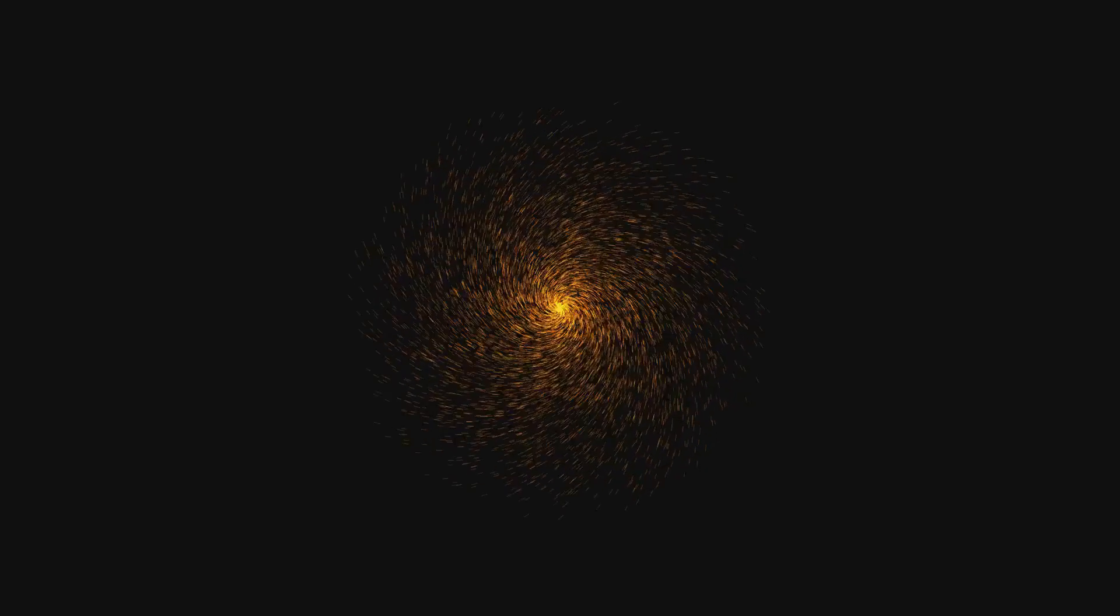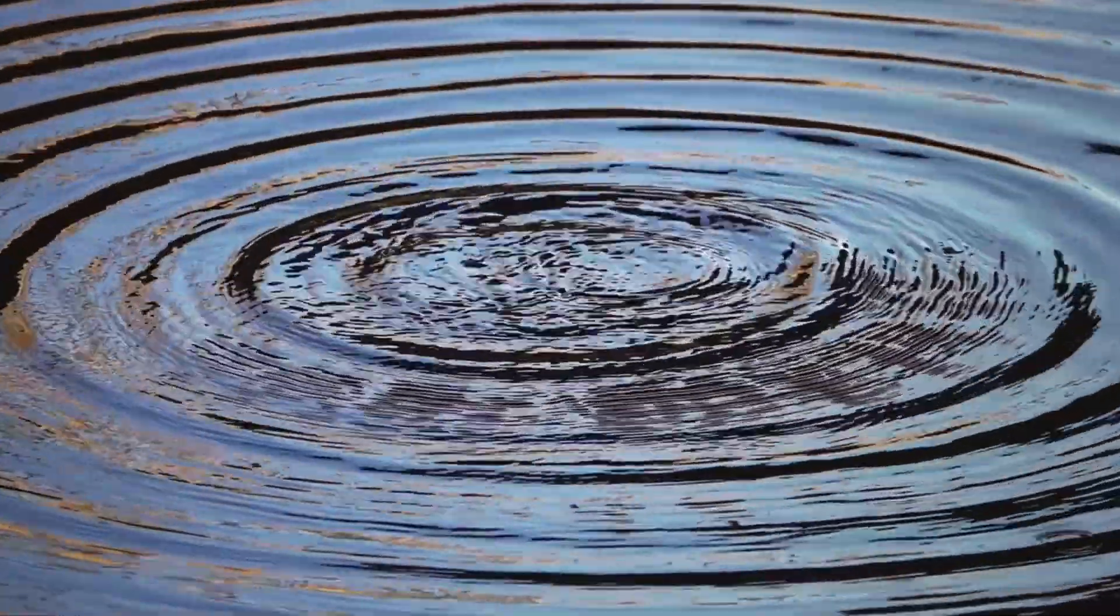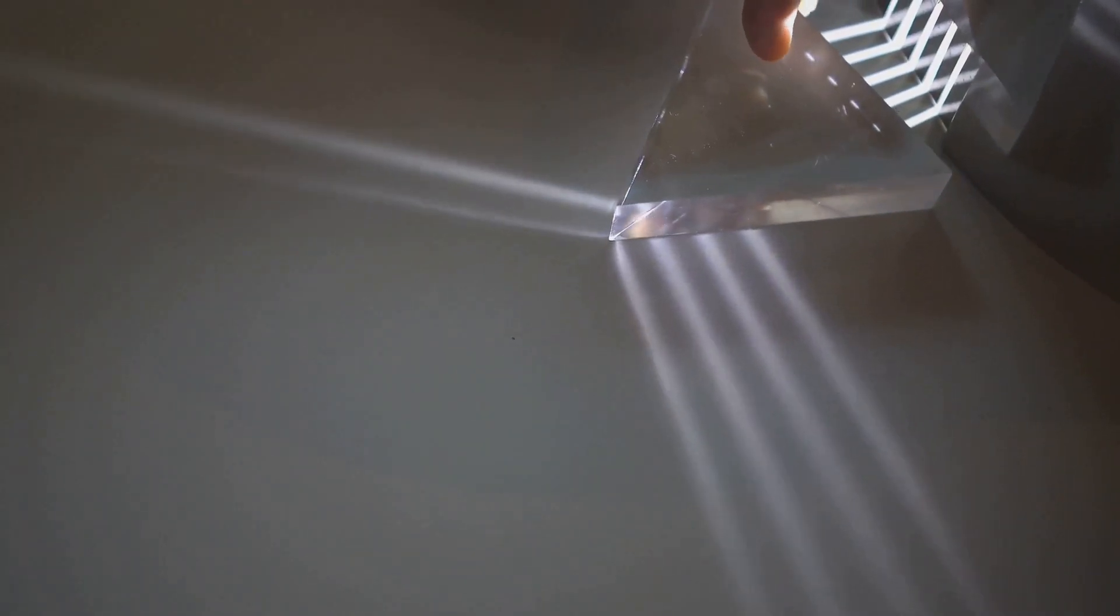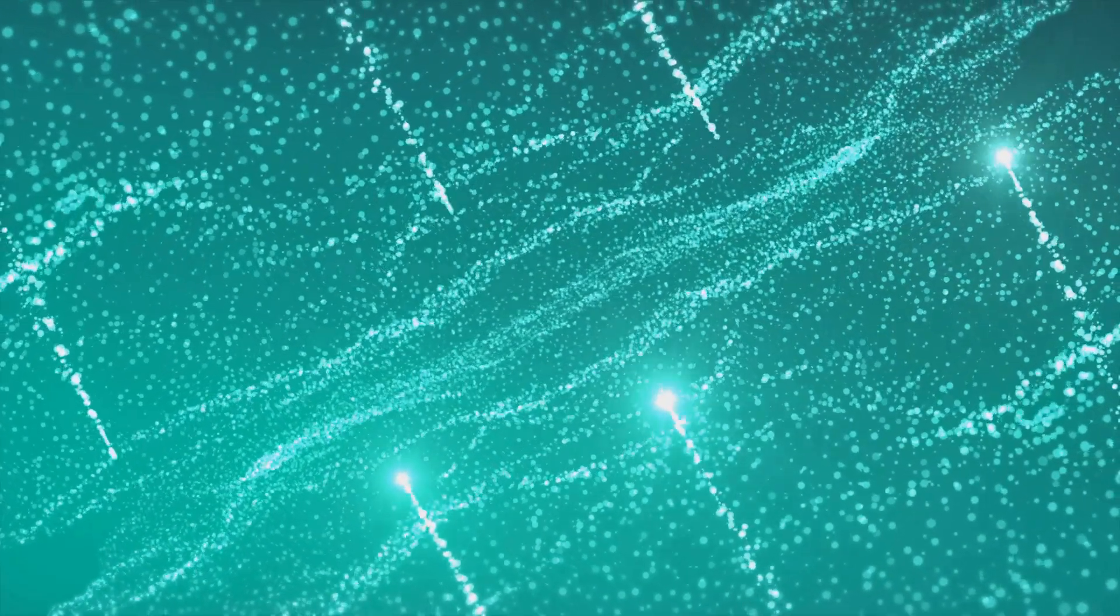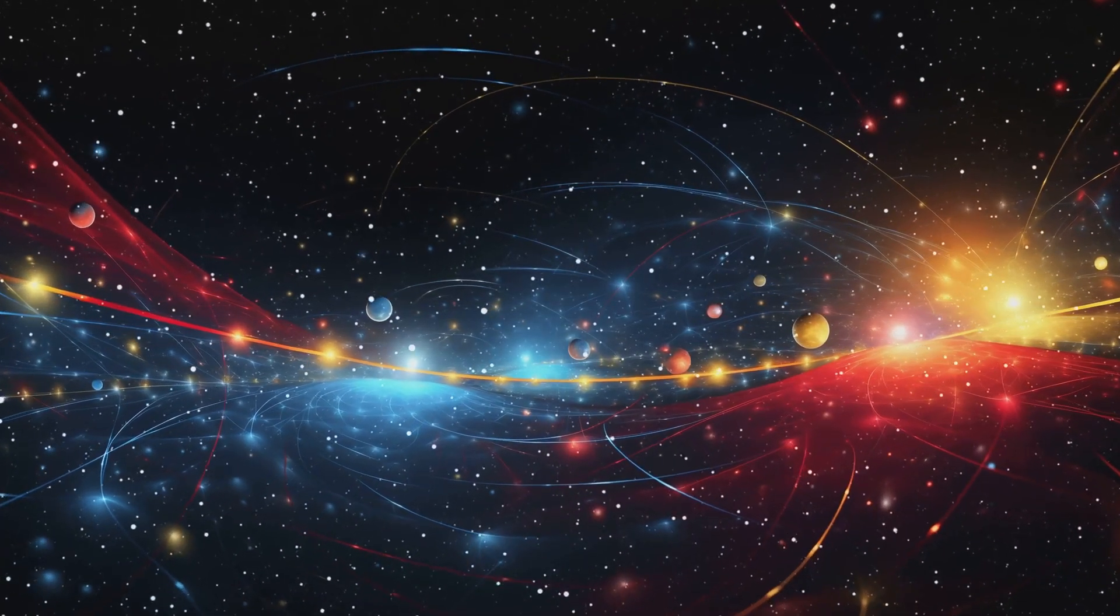But here's where it gets really mind-bending. At other times, photons act unmistakably like waves, not like compact bullets but like spreading ripples. They can exhibit phenomena like diffraction, bending around obstacles in their path, and they show interference, a hallmark of waves. This baffling ability to be both yet neither is wave-particle duality. It's a central tenet of quantum mechanics.